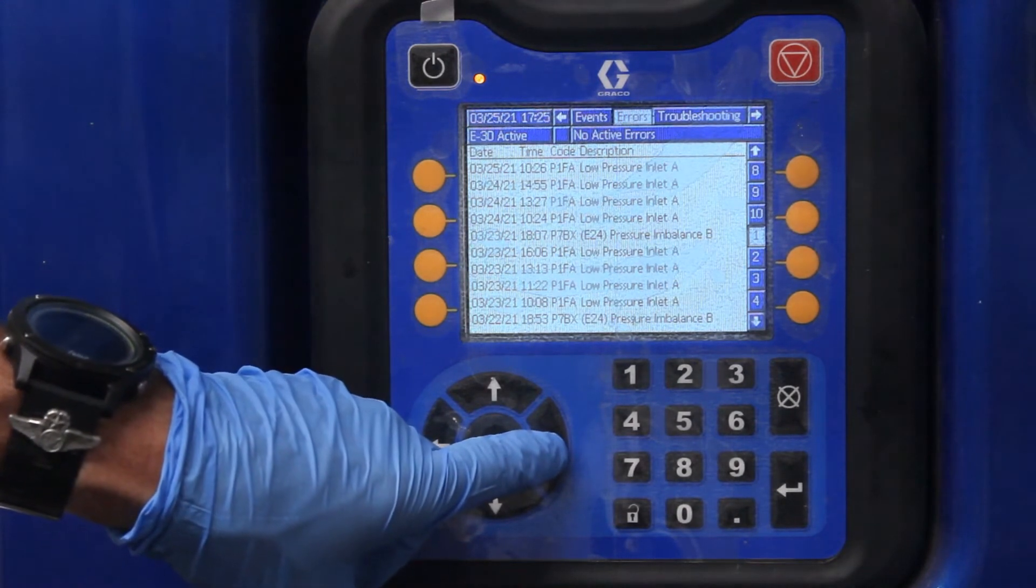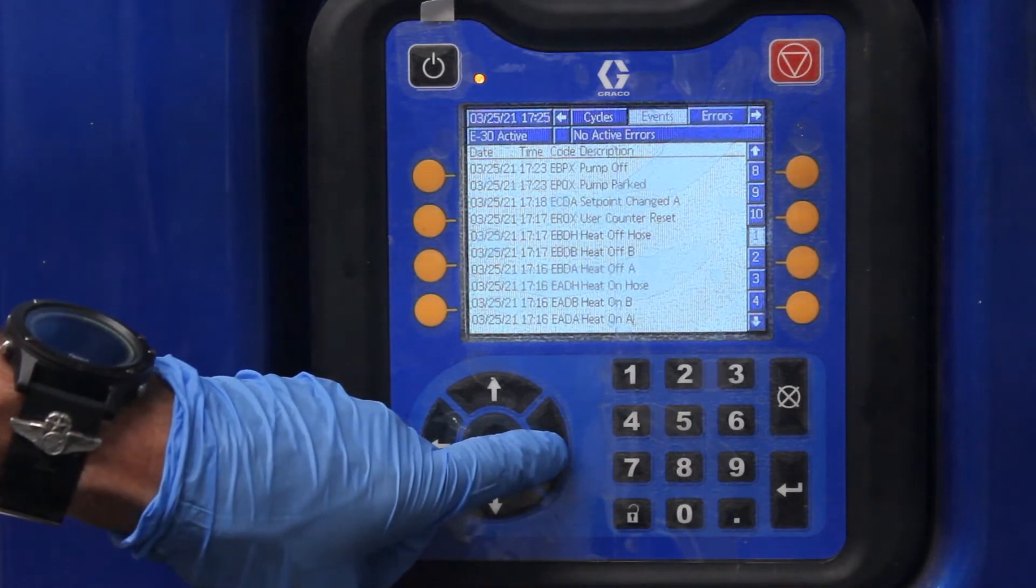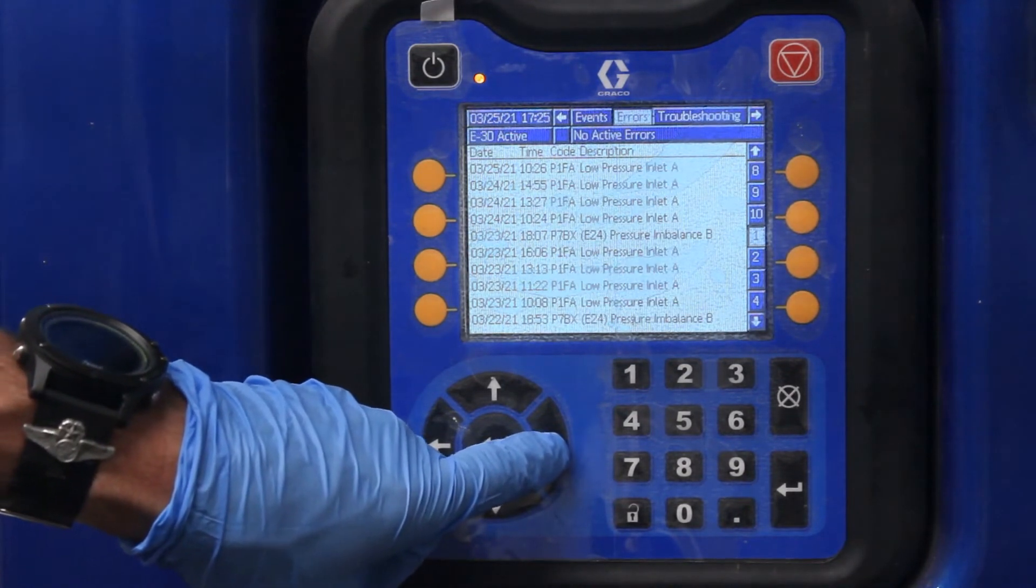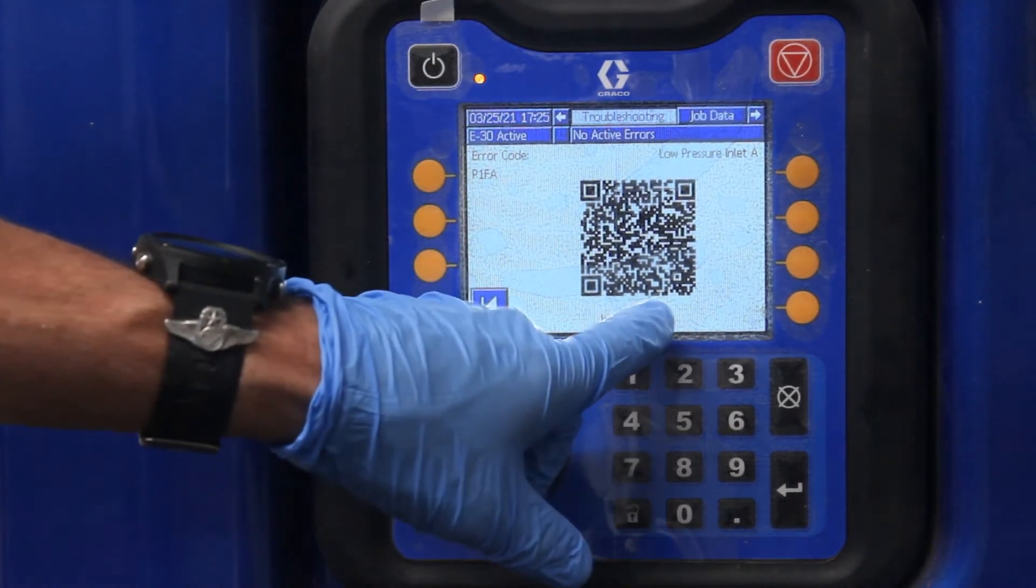These are errors, common errors that you would have, low pressure, E24s basically. And if you have any errors on the machine itself, it'll give you a scan code.